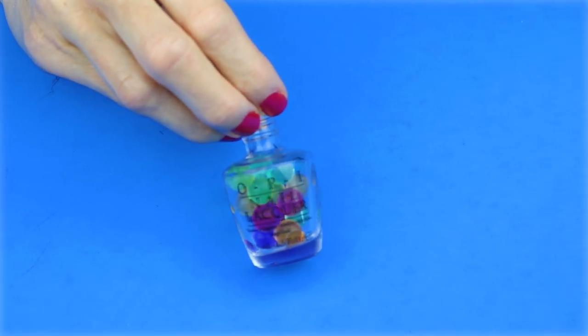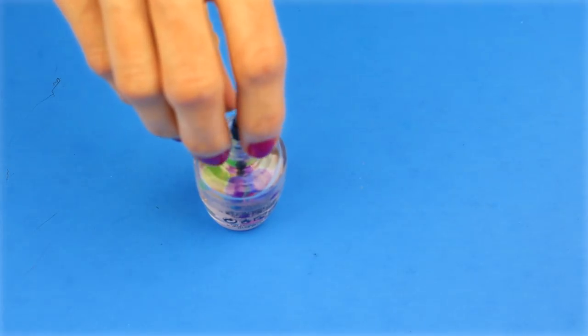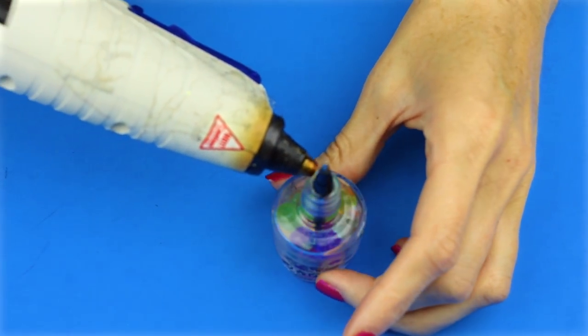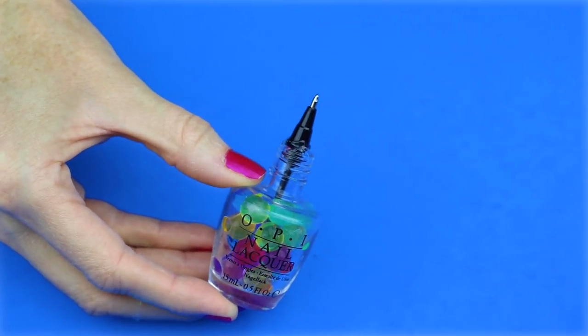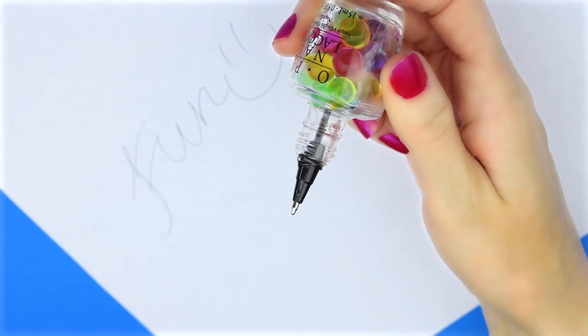Once the Orbeez had grown, then I placed the ink into the nail polish bottle. And with some hot glue, I secured the ink into the nail polish bottle. Make sure to add a little bit of water to the bottle before you glue the pen in there so the Orbeez don't shrink down. That's all there is to these easy Orbeez nail polish pens.